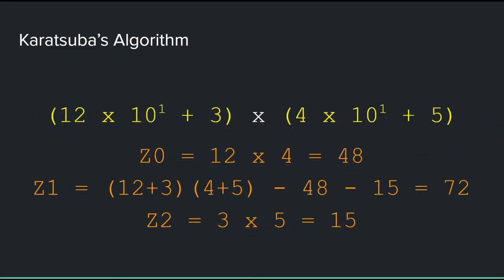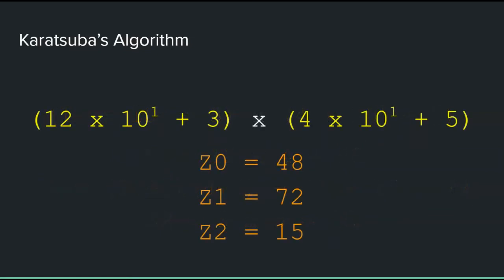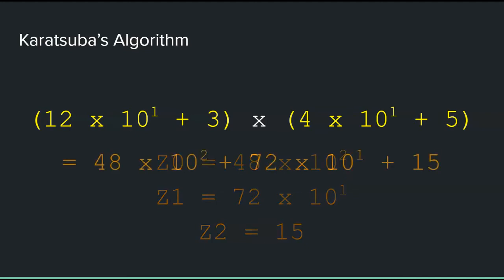To get Z1, multiply the two parts of each digit. So, that's 12 and 3 together with 4 and 5. And then subtract Z0 and Z2. Now that we have all Z0, Z1 and Z2, what we need to do is take Z0 and multiply it by the square of the power we used before. Then we take Z1 and multiply it by the same power. And then add Z2. So, you get this. And if you add it all up, you get 5,535.